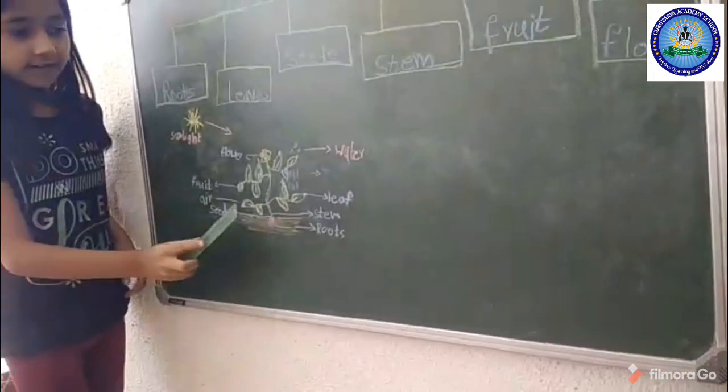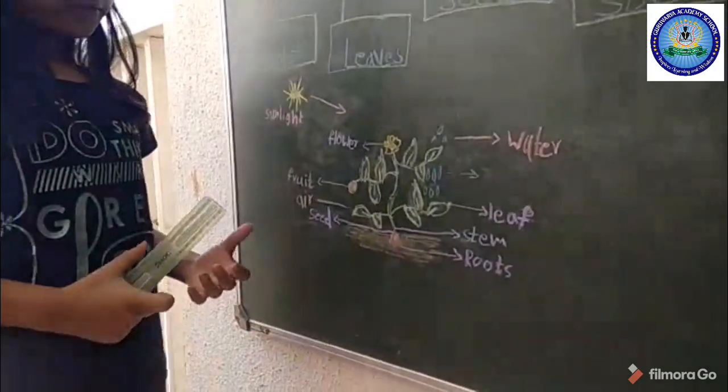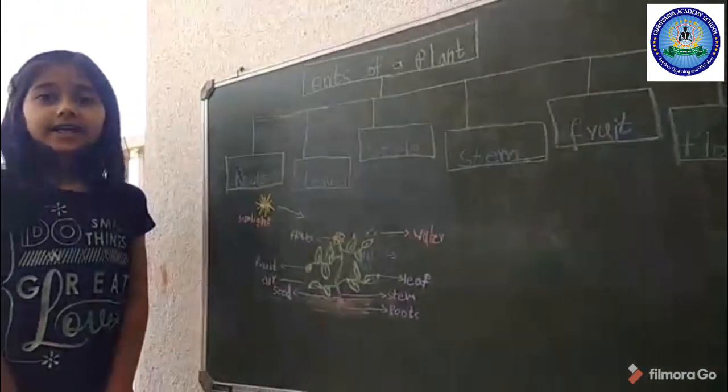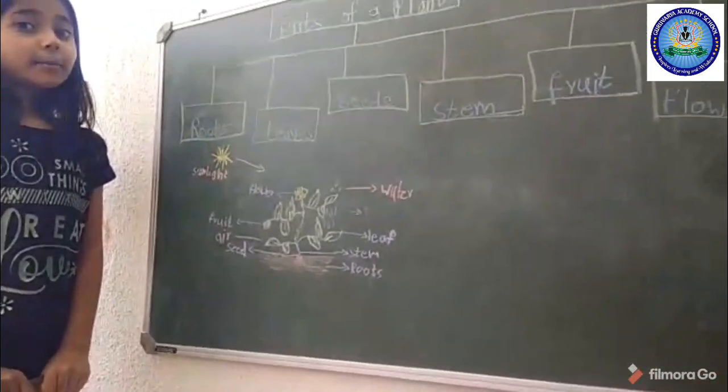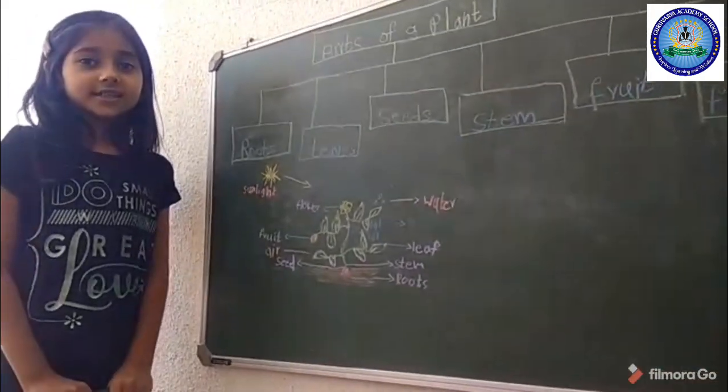air and water. We take oxygen and give carbon dioxide. Plants take carbon dioxide and give us oxygen. Thank you.